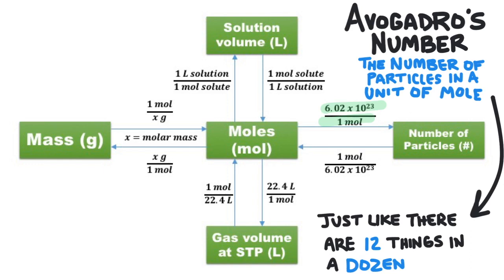To convert from number of particles to moles, we will use a conversion factor that will cancel the number of particles and leave us with the unit of mole. A conversion factor is a fraction where the unit you want to cancel is on the bottom and the new unit is on the top.